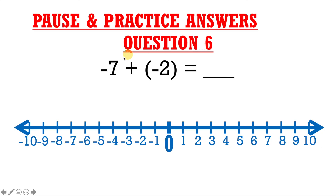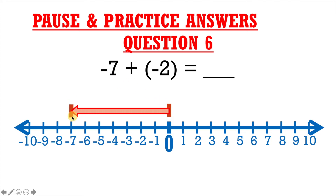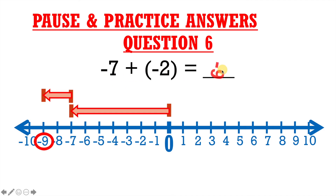Question 6: negative 7 plus negative 2 equals blank. Since this is the arrow method, we put a dash over 0 and go from 0 to negative 7, putting a dash over there. Then from negative 7, we draw an arrow traveling two spaces to the left, because that's negative, and place a dash over the final answer, which is negative 9. Therefore, negative 7 plus negative 2 equals negative 9.